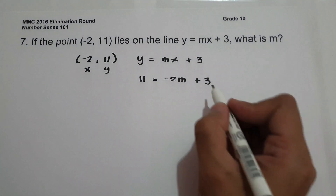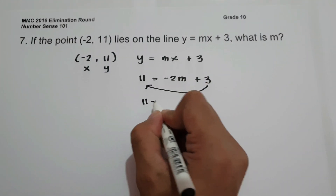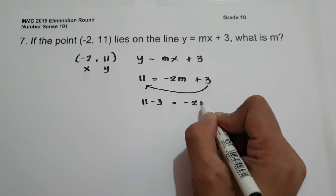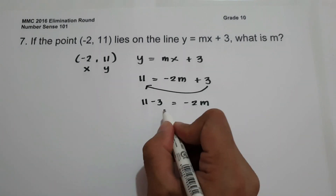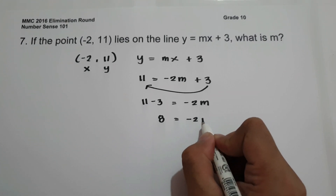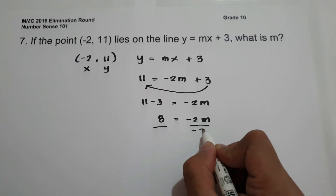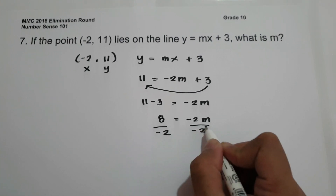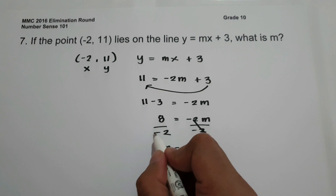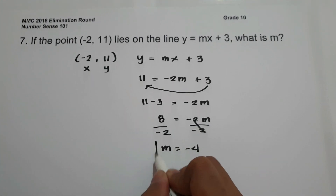Moving 3 to the side of 11 gives us 11 minus 3 equals negative 2m. That is 8 equals negative 2m. Dividing the whole equation by negative 2, the value of m is 8 divided by negative 2, which is negative 4. This is our answer.